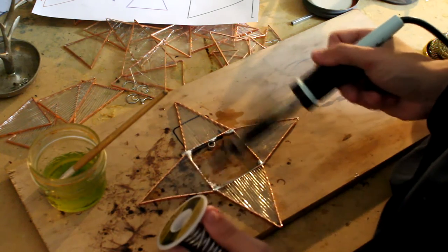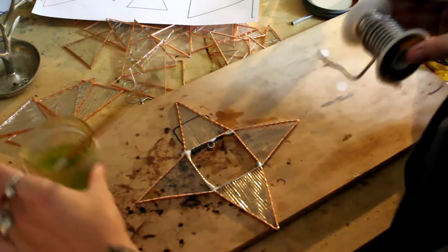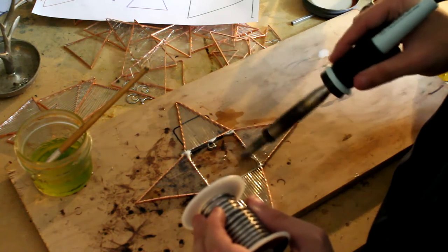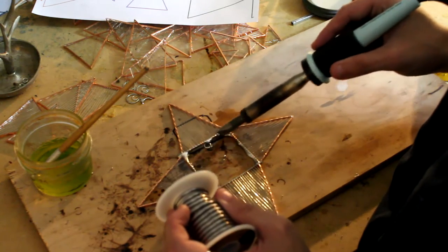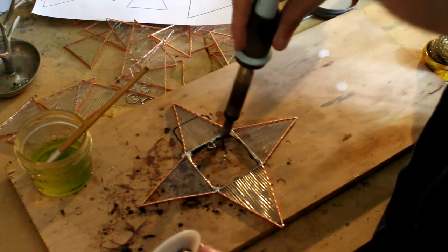And then make sure you solder the inside seams of the star. You don't want to get on top of it. You don't want any solder to kind of get in your way of putting the other points on. So just solder the inside seam, making sure all those points soldered together.